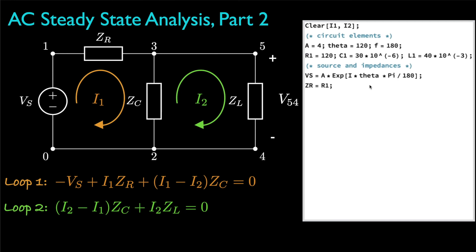Next, we specify the impedance for the resistor, for the inductor, for the capacitor, and then we set up the equations for loop 1 and loop 2, and then use Mathematica's solve function to solve the two equations for I1 and I2.